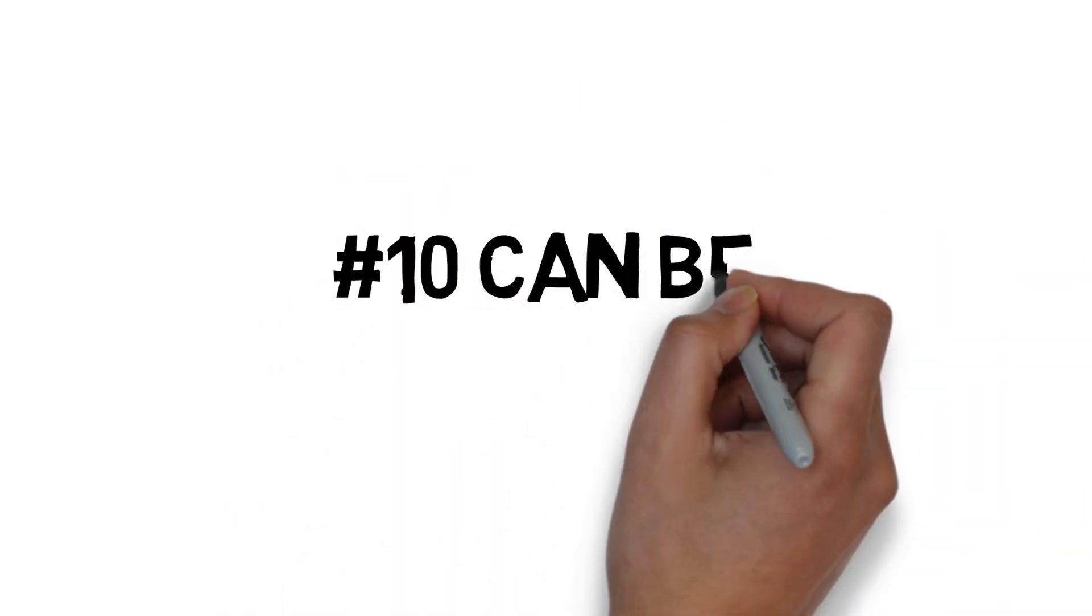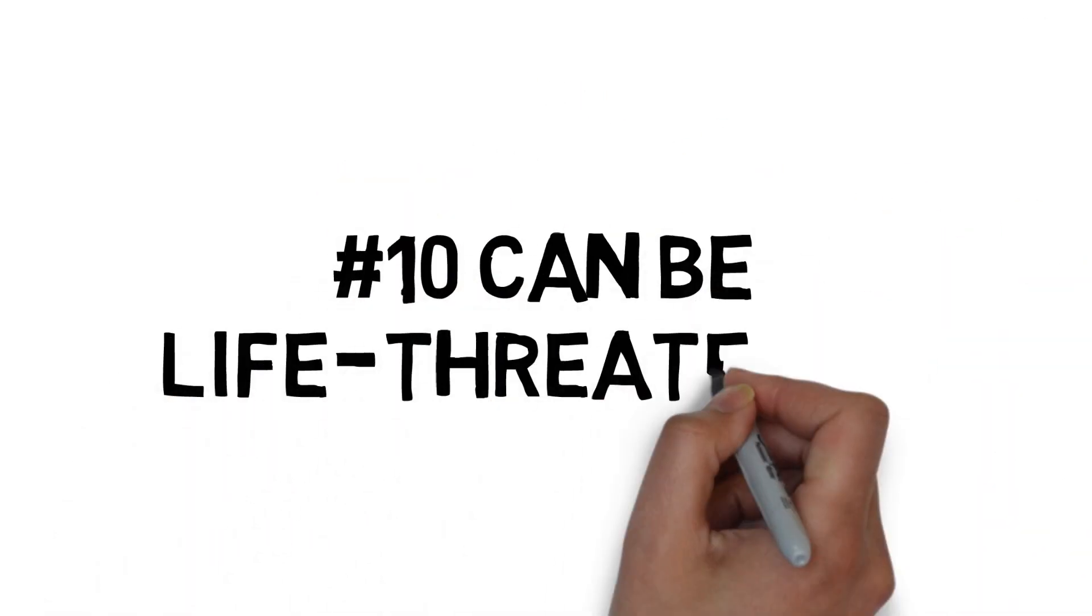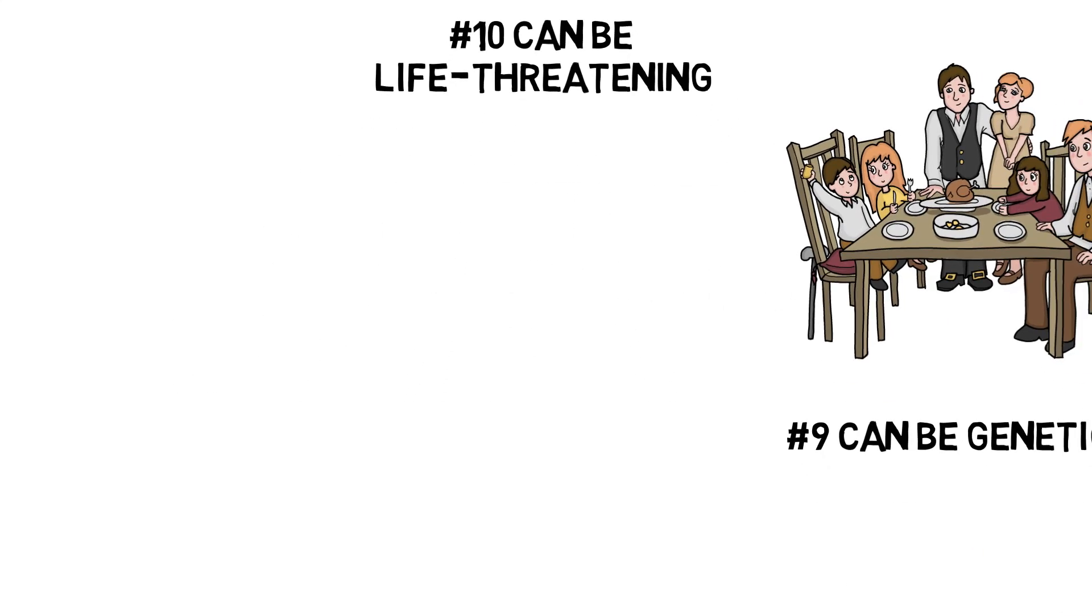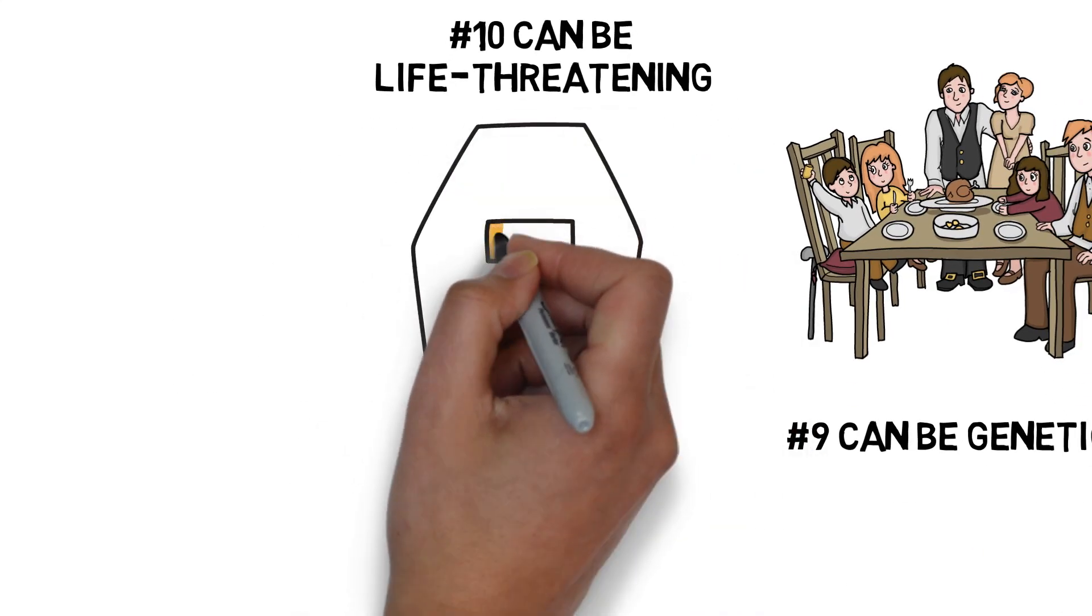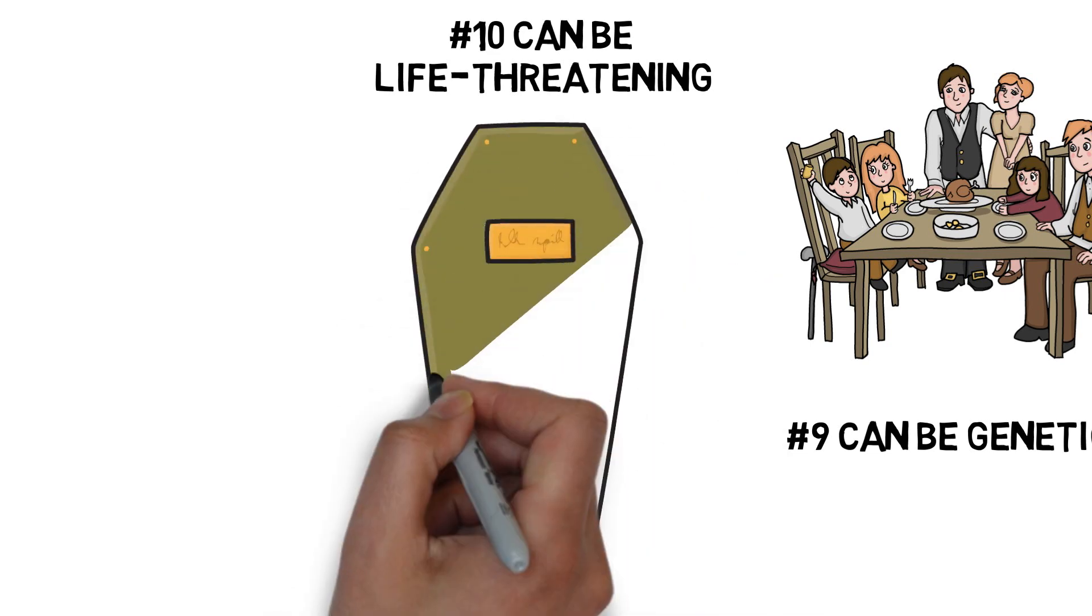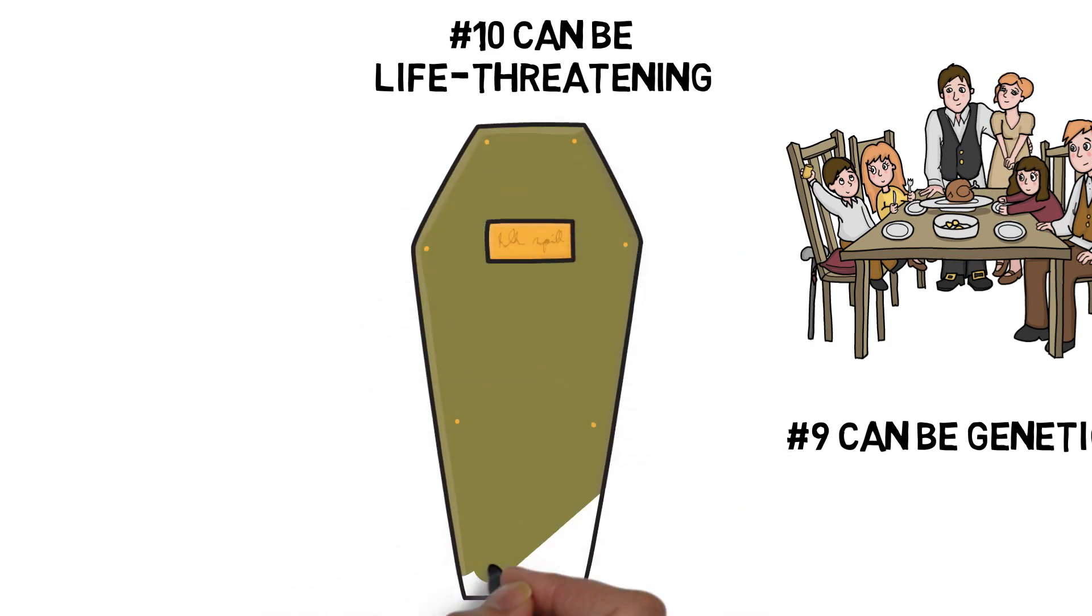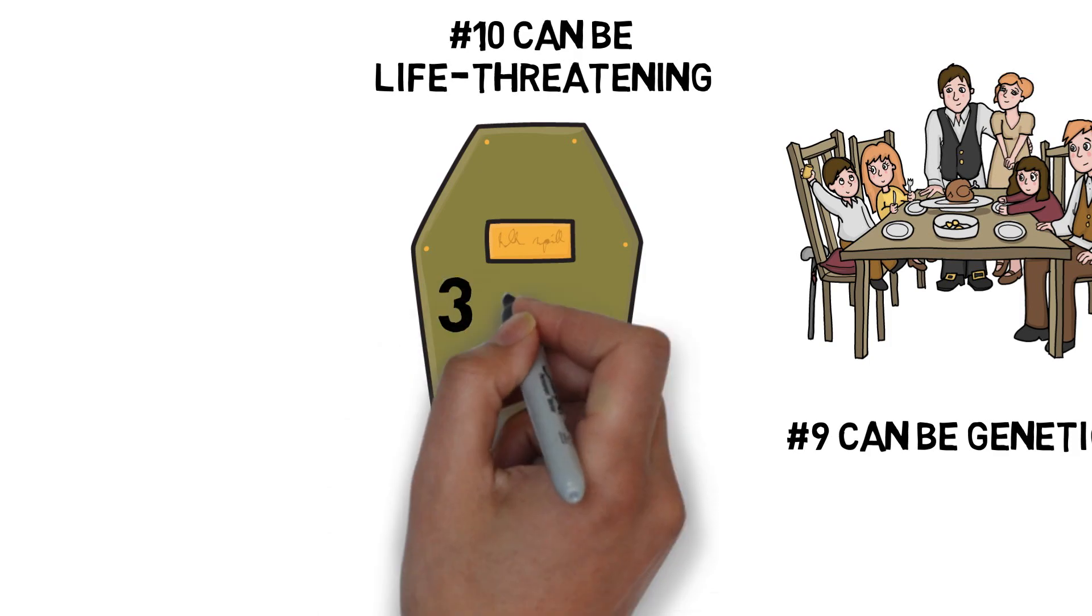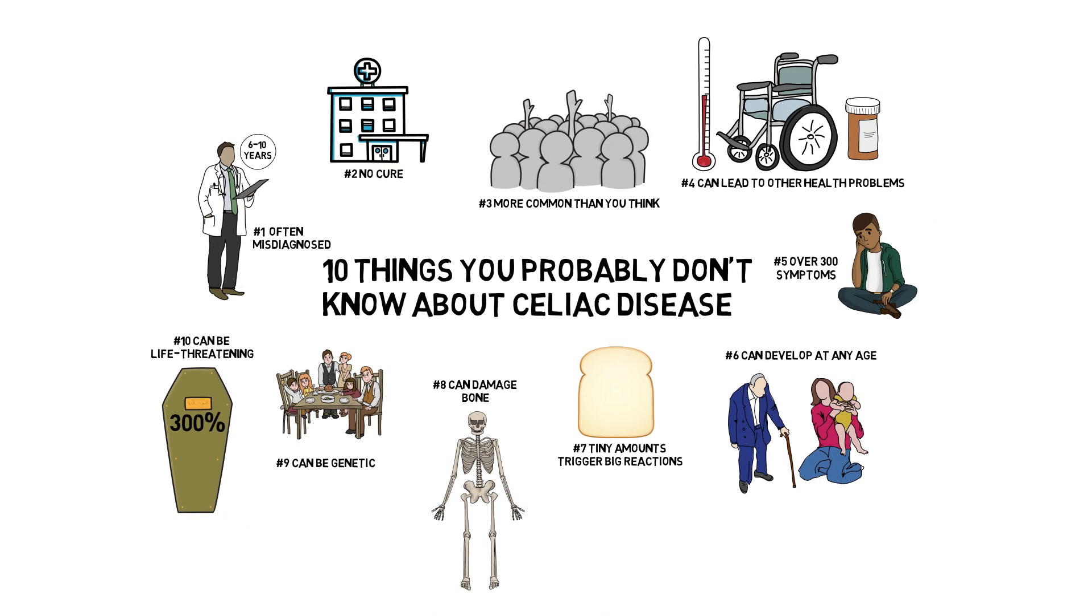Number 10. Without proper treatment, celiac disease can become life-threatening. Again, because the only treatment for celiac disease is a gluten-free diet, the main health concerns come with late or non-existent diagnoses. According to one study, undiagnosed celiac disease can increase your risk of death by 300%.